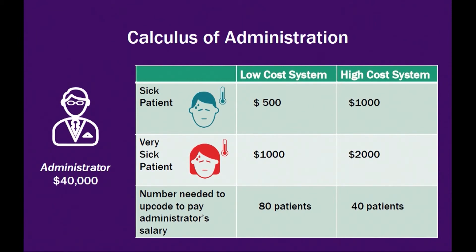So how many patients does it take? If you only get a $500 difference in a low-cost system between the sick and the very sick, that administrator has to code 80 patients up to pay for their salary. But if I pay twice as much money for everything, that administrator only has to code 40 patients to pay for their salary.